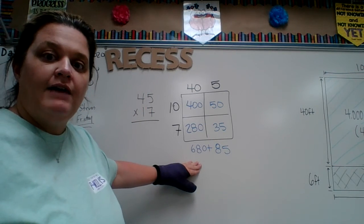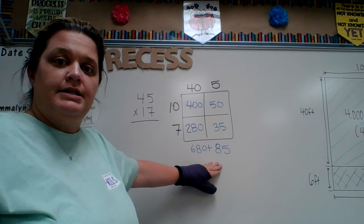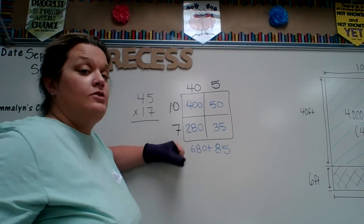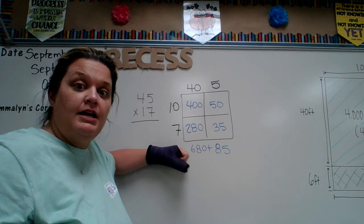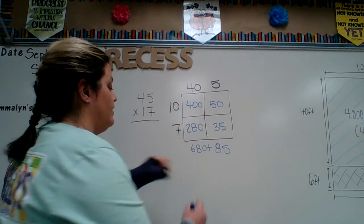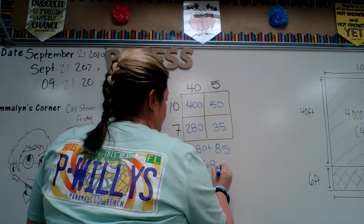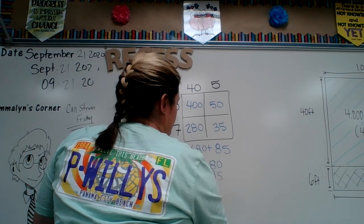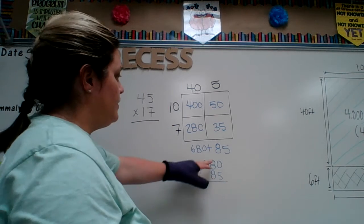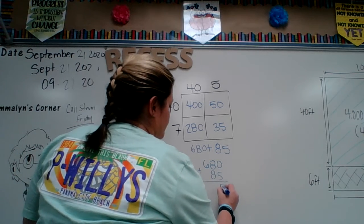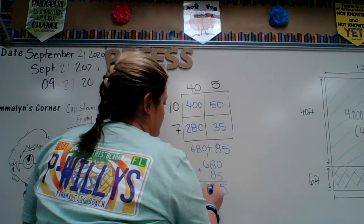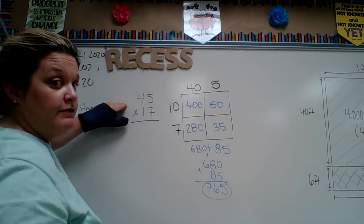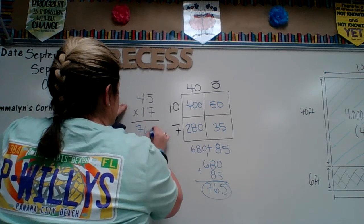So now I know that I have to add 680 plus 85. I'm going to rewrite this vertically. So 5 plus 0 is 5, 8 plus 8 is 16 — carry my 1 — giving 760. So the answer to 45 times 17 is 765.